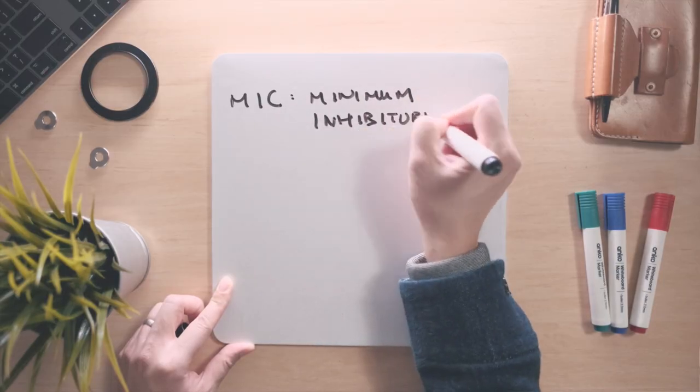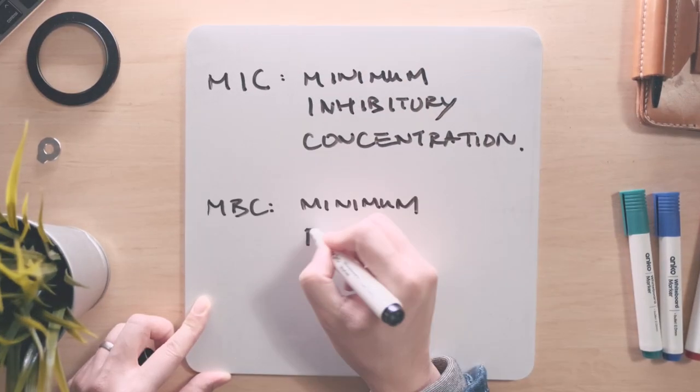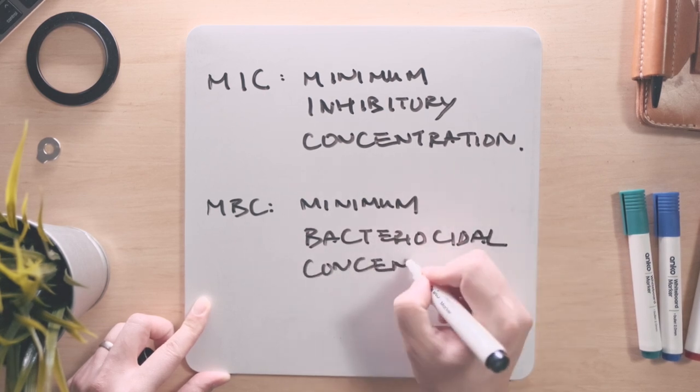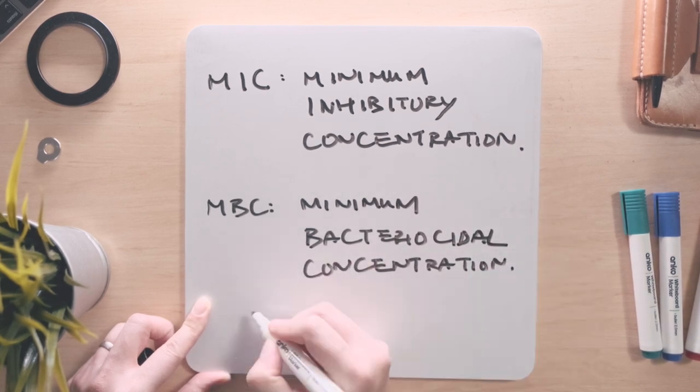So far, all of the zones of inhibition were determined using a specific concentration of each antibiotic for different bacteria. In clinical settings, the doctor will want to prescribe the lowest concentration of antibiotics that will still stop the infection while minimizing potential side effects for the patient. This is where MIC — minimum inhibitory concentration — and MBC — minimum bactericidal concentration — come into play.